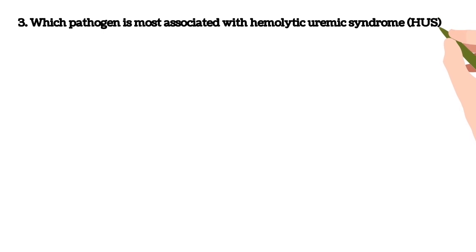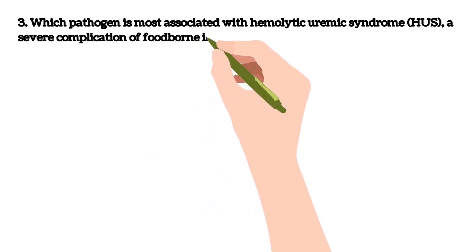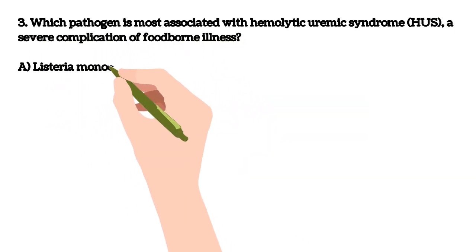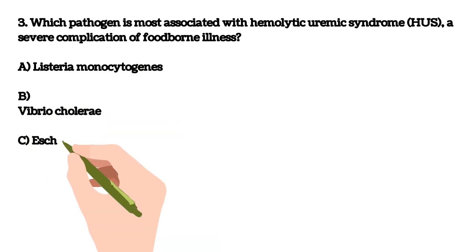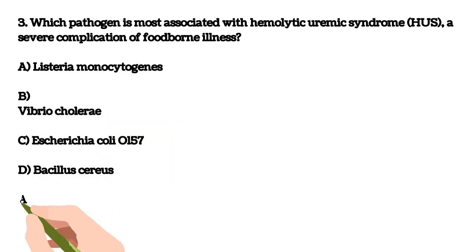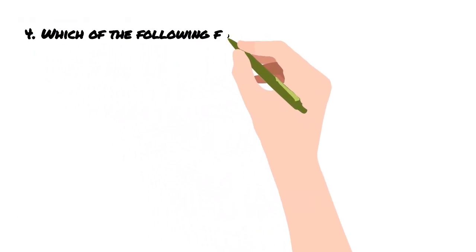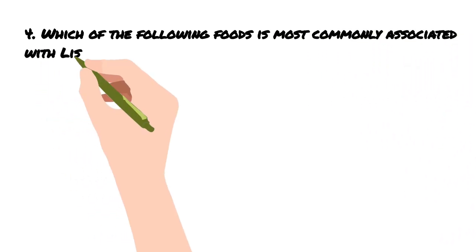Third question: which pathogen is most associated with hemolytic uremic syndrome (HUS), a severe complication of foodborne illness? A) Listeria monocytogenes, B) Vibrio cholerae, C) E. coli O157, D) Bacillus cereus. Your answer is C) E. coli O157.